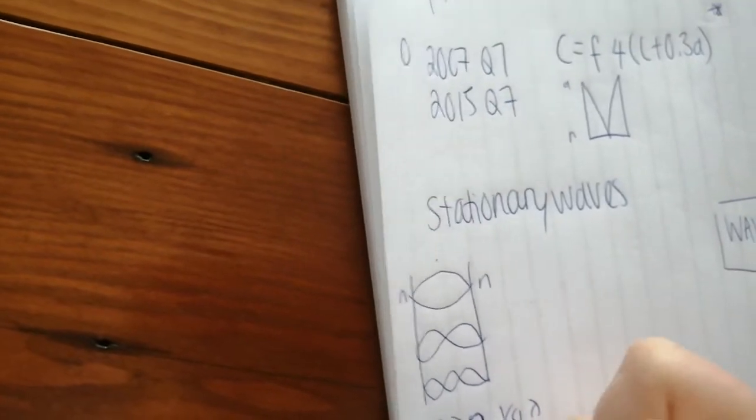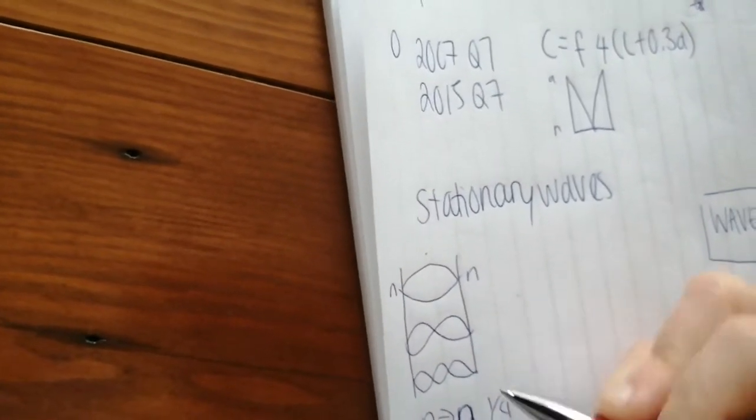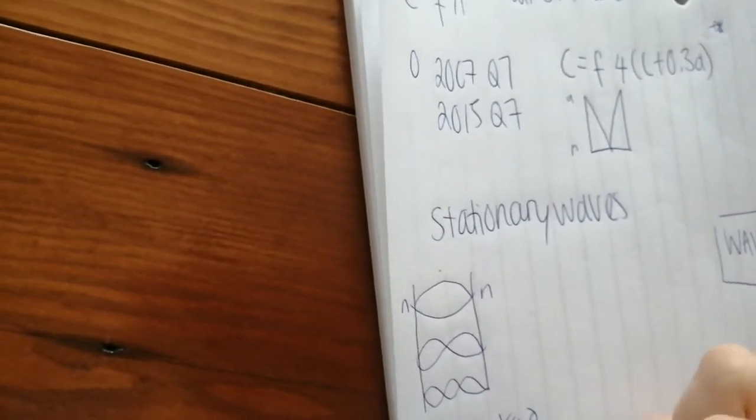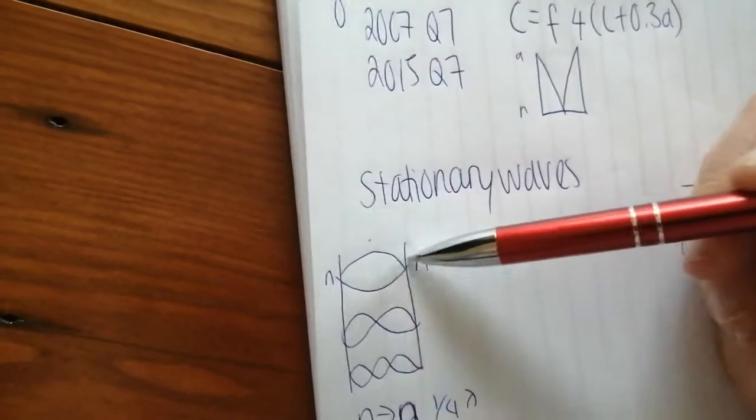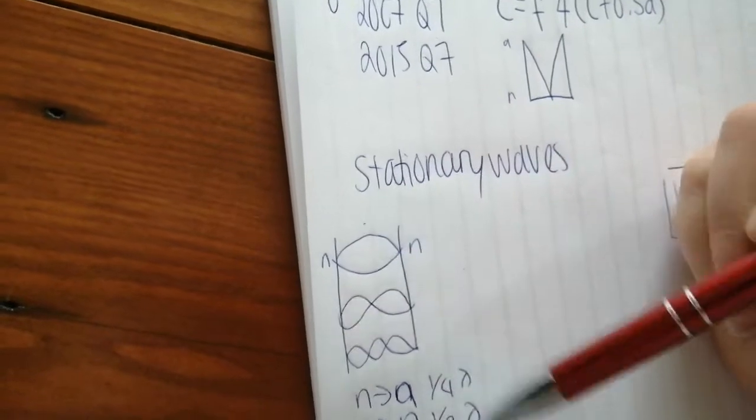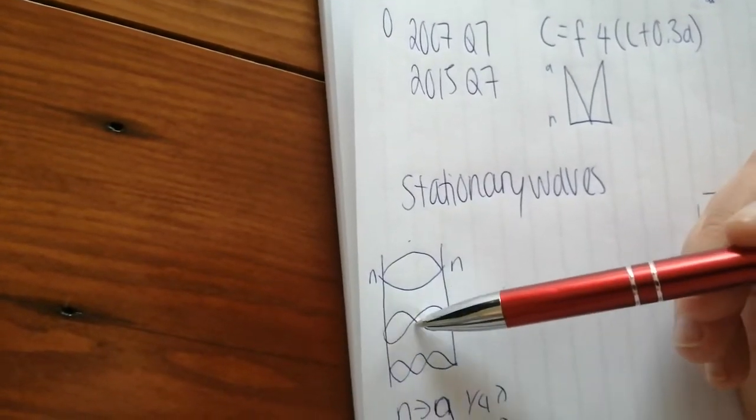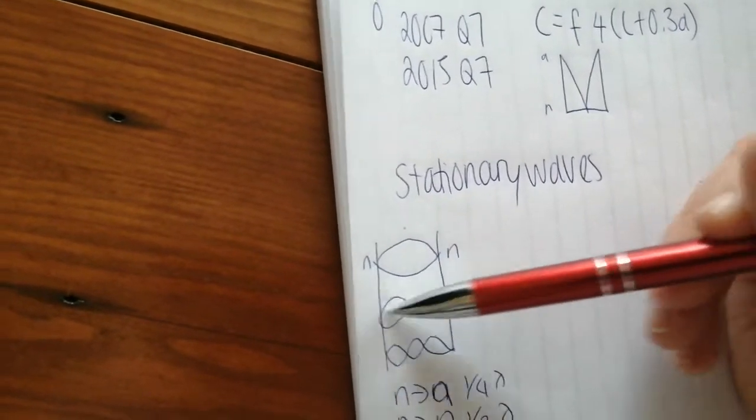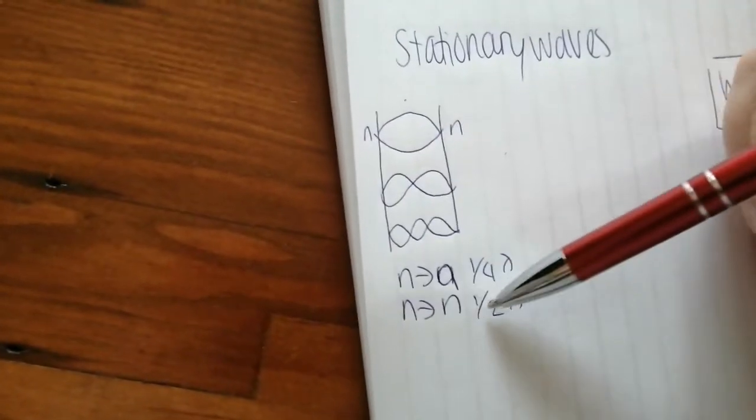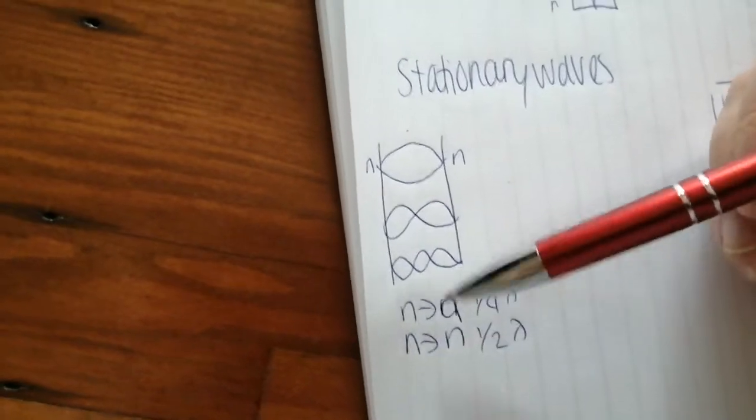So what you'll find is you need to remember the fact that from a node to an anti-node is quarter of a wavelength and a node to a node or an anti-node to an anti-node is half a wavelength. So in this case here, the length of the string would be equal to half a wavelength.